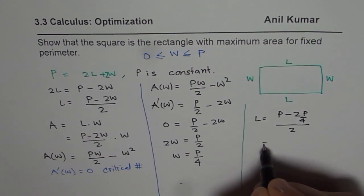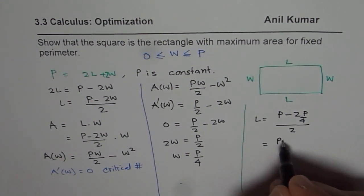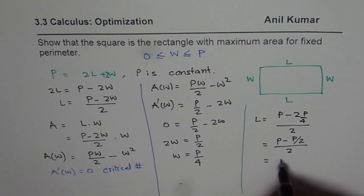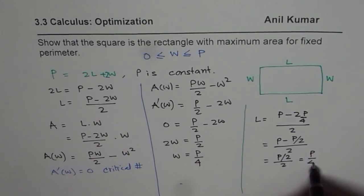So which equals P minus P over 2 divided by 2. So that is half P, so that is P over 2 divided by 2, or P over 4.